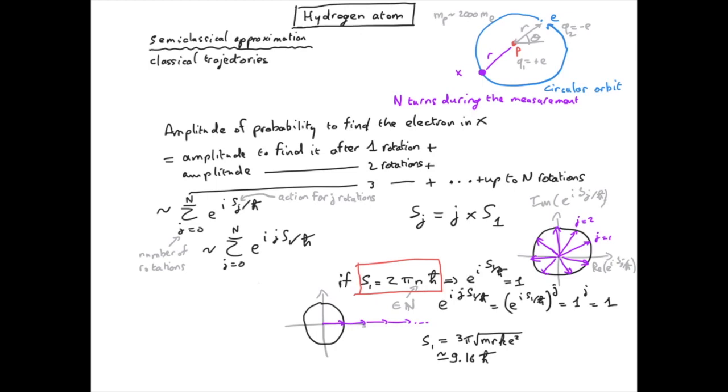Now if we combine this expression for S1 with the one we got earlier for classical trajectory, we can easily show that the radius for the trajectories, for the orbit of the electron, can only take some well defined discrete values.